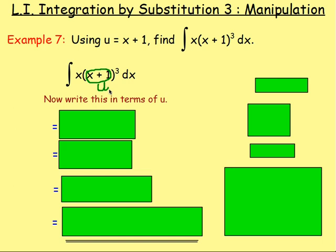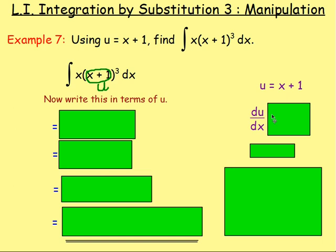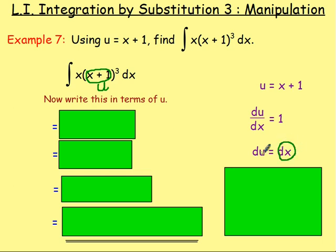To write it in terms of u, we take our substitution. We've got u equals x plus 1. We differentiate u with respect to x, so du by dx equals 1. Having u on one side and x on the other, multiply both sides by dx and we know that du equals dx. So because du equals dx, it means dx is du — we can swap dx with du. But what we are left with is this x term.